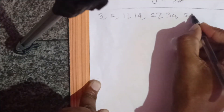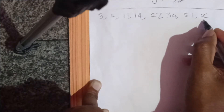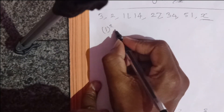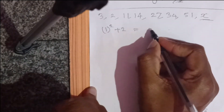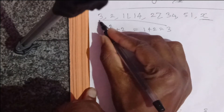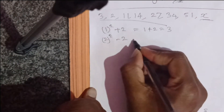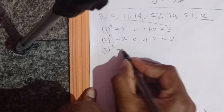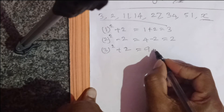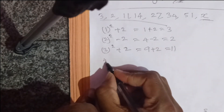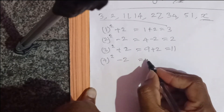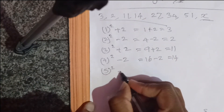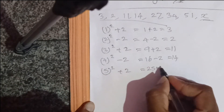Here we find X. The pattern is: 1² + 2 = 3 (first number); 2² - 2 = 2 (second number); 3² + 2 = 11; 4² - 2 = 14; 5² + 2 = 27; 6² - 2 = 34.